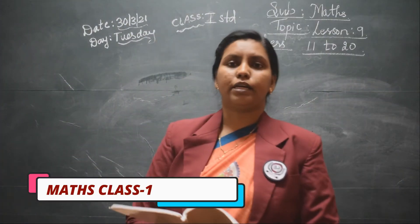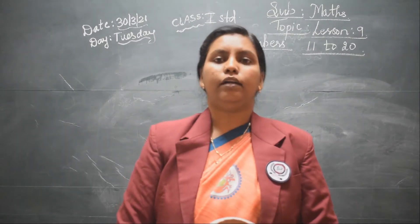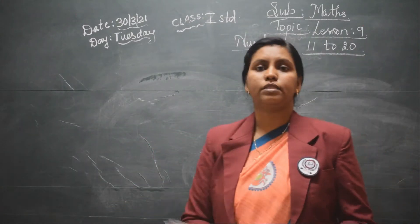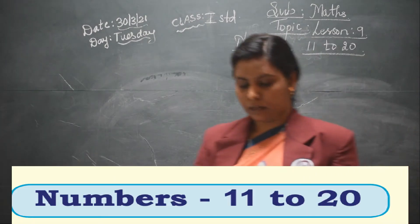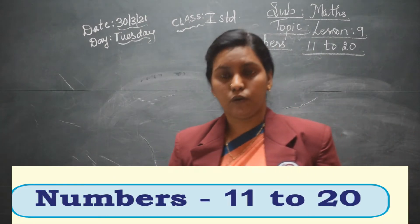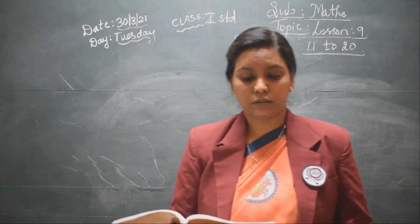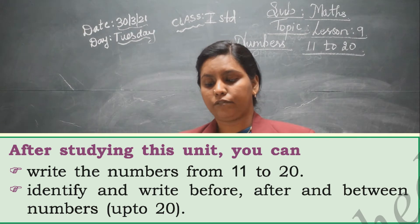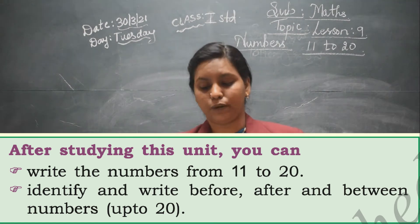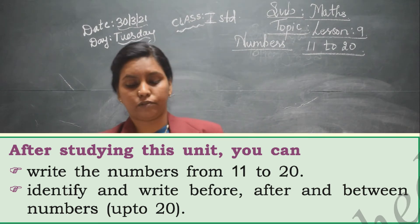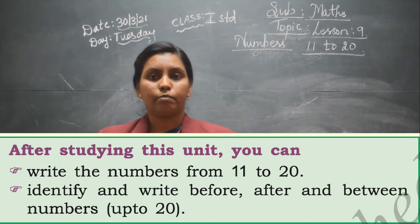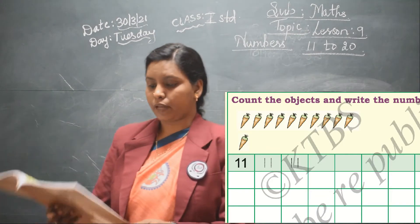Today we will be taking the subject maths for class 1st standard, and the topic which we will be discussing is lesson number 9: numbers 11 to 20. On page number 104 they have given you the activities you have to complete. After studying this unit you can write the numbers from 11 to 20 and identify and write before, after, and between numbers up to 20.